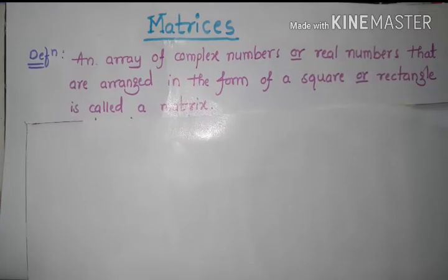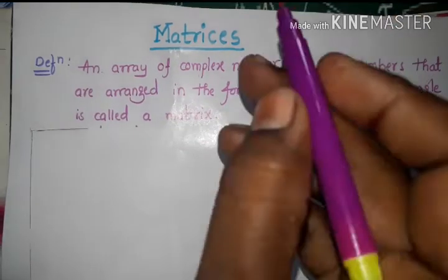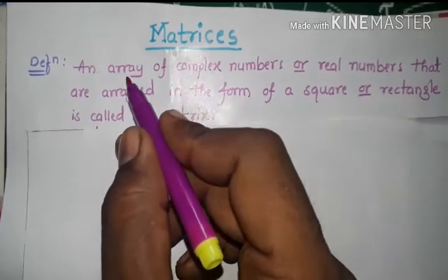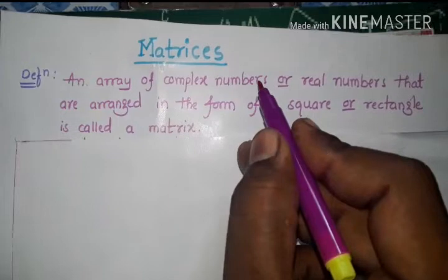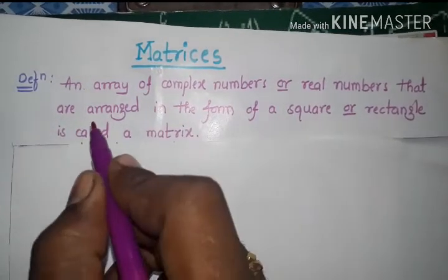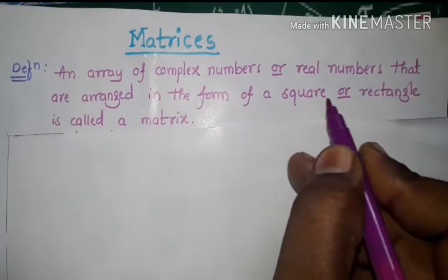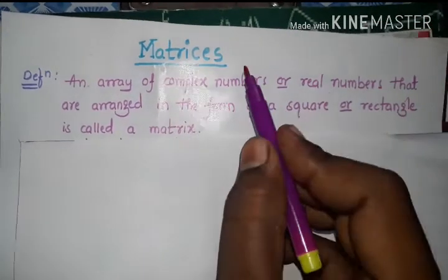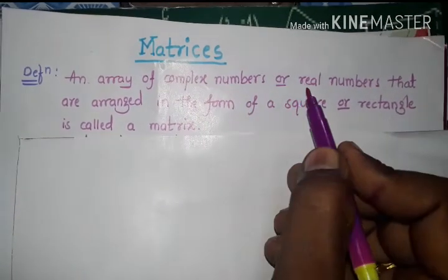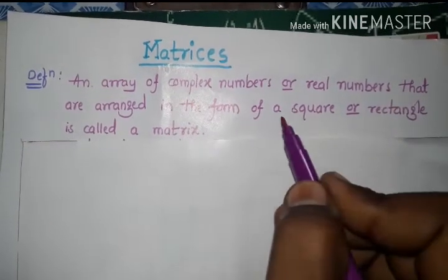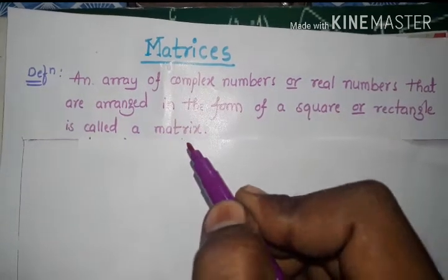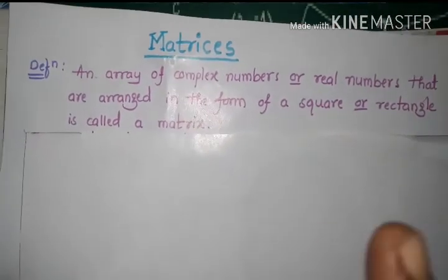Hi, hello. Now we discuss the concept of matrices. The definition is: an array of complex numbers or real numbers that are arranged in the form of a square or rectangle is called a matrix. Complex numbers and real numbers will be arranged in the form of square or rectangle.